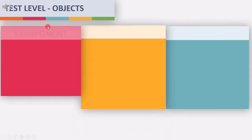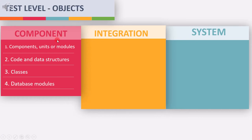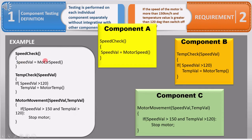Let's start with the component testing level and see what the test objects are. The first test objects are component, unit, module, or code. During definition, we saw a small piece of code and derived different components out of it. Each of these is referred to as a component, unit, or module. To find out these components, we need code, and these units act as test objects for the component level.